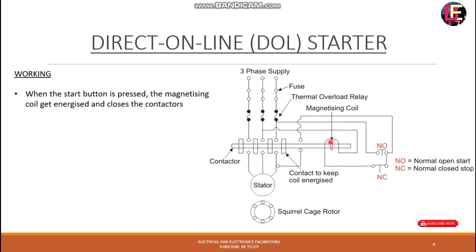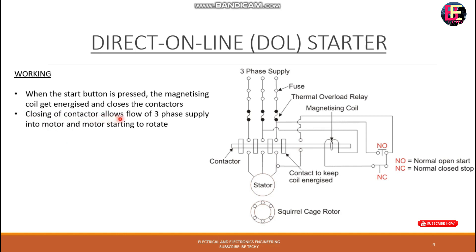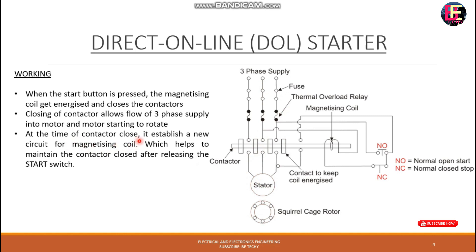The coil will be energized. When the start button is pressed, the magnetizing coil is energized, and the coil closes the contactor. Closing of the contactor allows flow of 3-phase supply into the motor. The motor starts to rotate when the contactor closes.